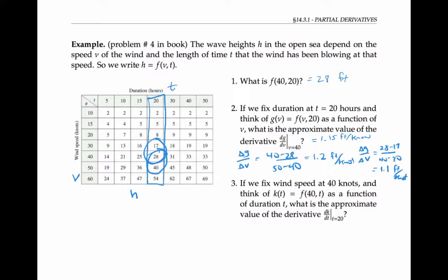In the next problem, we're asked to do the same thing, but this time we're going to fix the wind speed at 40 knots. That means we're looking across this row. And now we want to think of f with the wind speed fixed just as a function of t, we'll call that k of t, and find dk/dt.